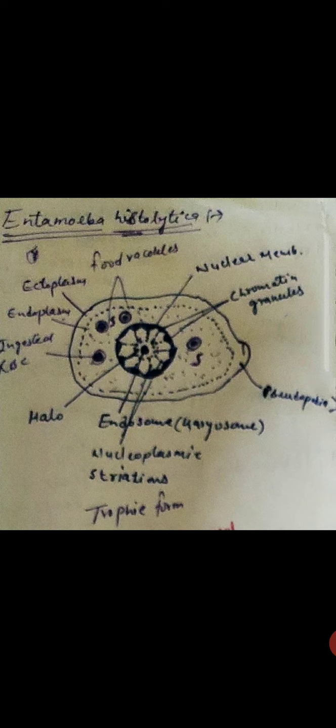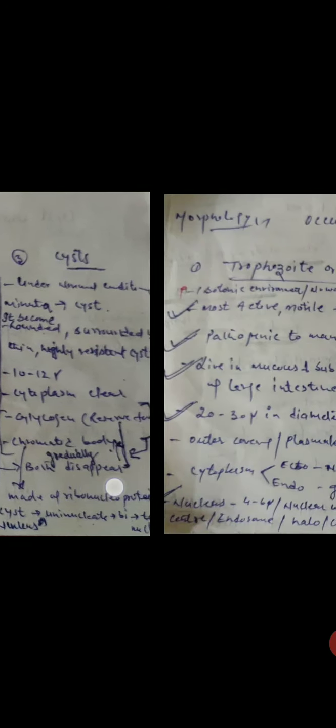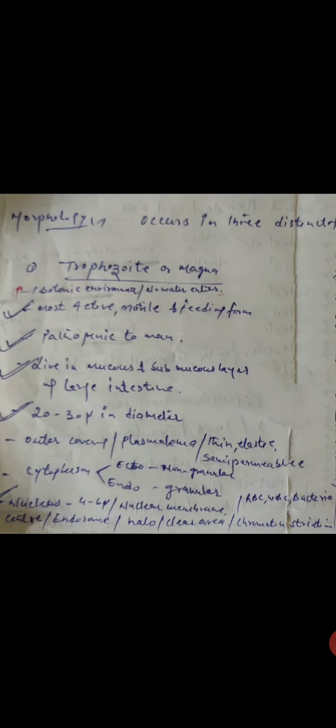This is the diagram of the trophozoites form. Trophozoites of Entamoeba histolytica is also known as magna or trophic form. It is most active, motile, and feeding form.